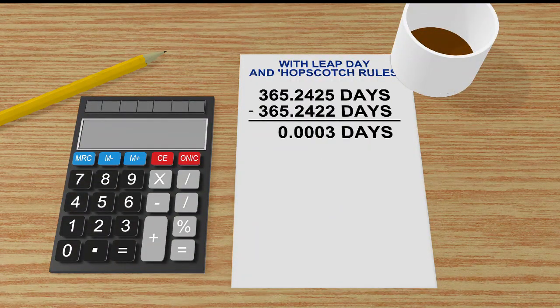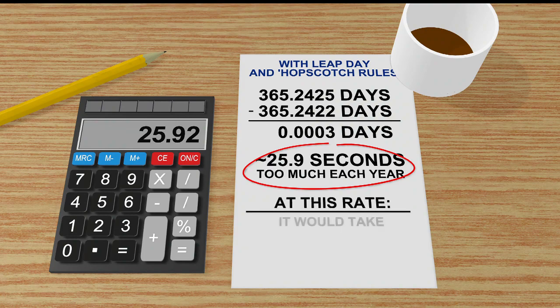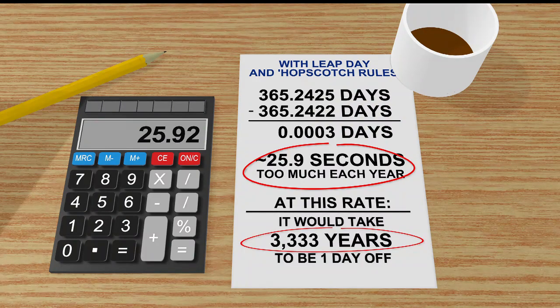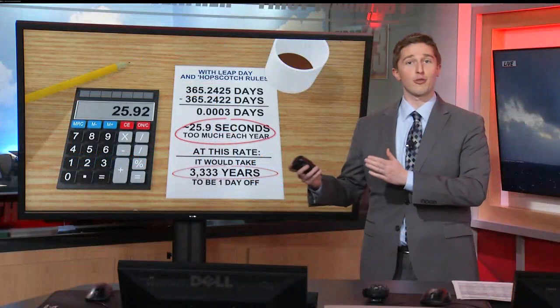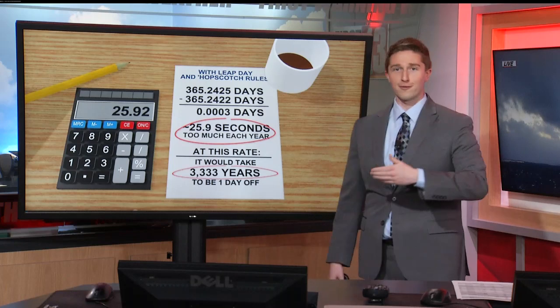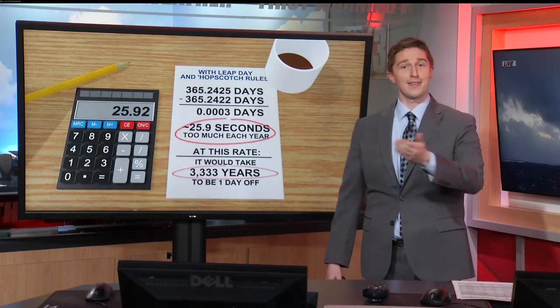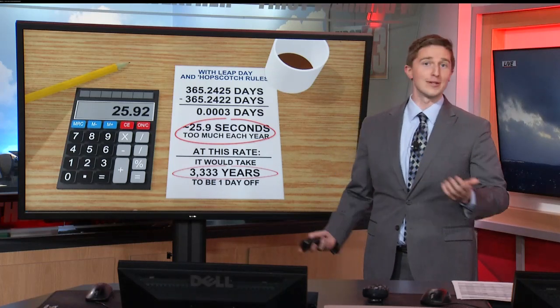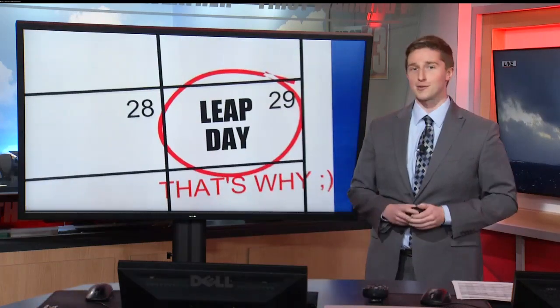Do the math again and now we're only off by about 25.9 seconds. That means it would take 3,333 years for us to be off by a day — and that is why we have leap year, in case you were wondering.